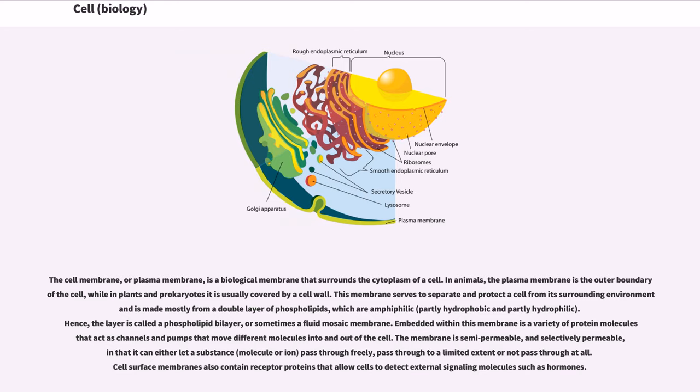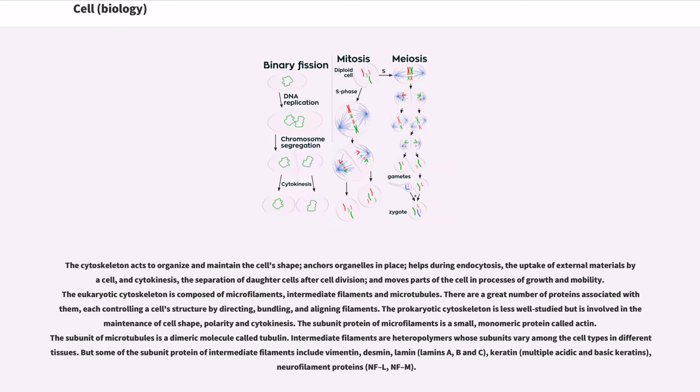The cytoskeleton acts to organize and maintain the cell's shape, anchors organelles in place, helps during endocytosis, the uptake of external materials by a cell, and cytokinesis, the separation of daughter cells after cell division, and moves parts of the cell in processes of growth and mobility.